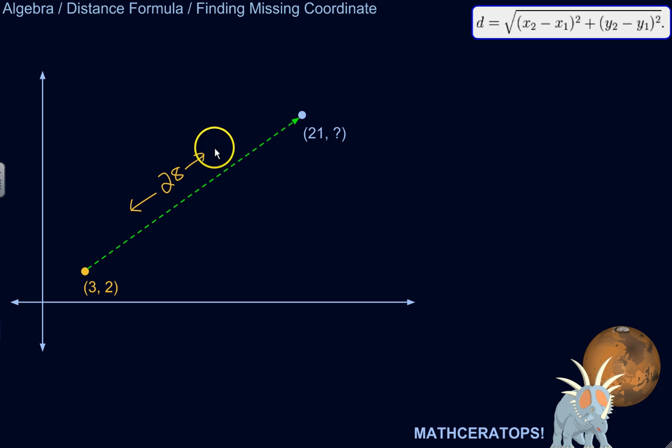if I already know the distance, but I don't know one of the coordinates, well, this equation will still hold true, it's just that I'll know this part, but not one of these parts. So let me show you that.